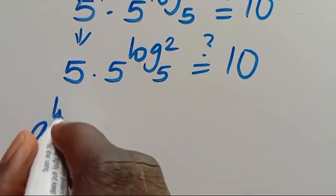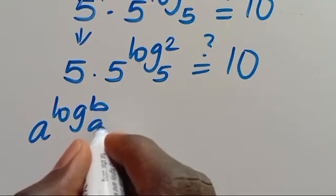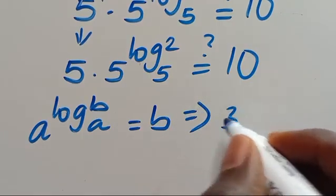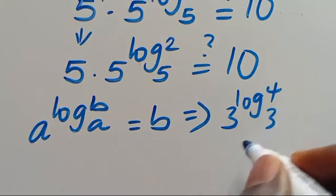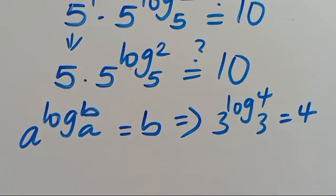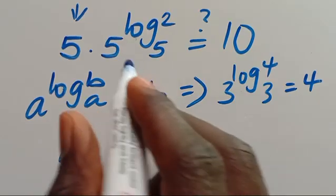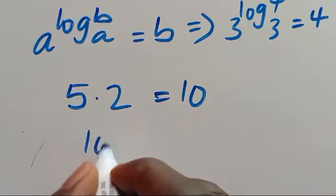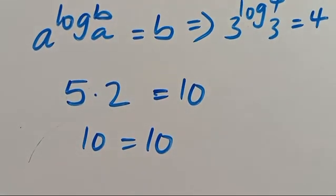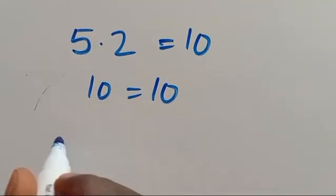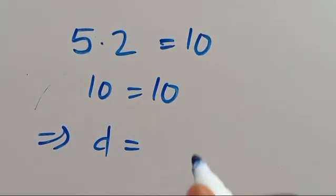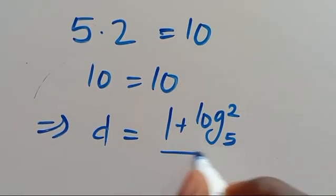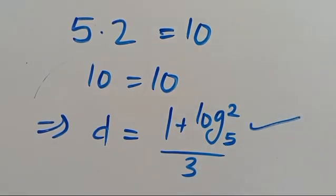Recall that A to the power of log B in base A equals B, since the base and the log base are the same. For example, 3 to the power of log 4 in base 3 equals 4. So here, 5 to the power of 1 plus log 2 in base 5 equals 5 times 2, which gives us 10. Since 10 equals 10, the left hand side equals the right hand side, confirming that D equals 1 plus log 2 in base 5, divided by 3, satisfies the problem.